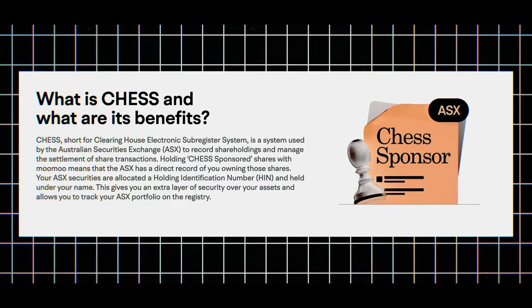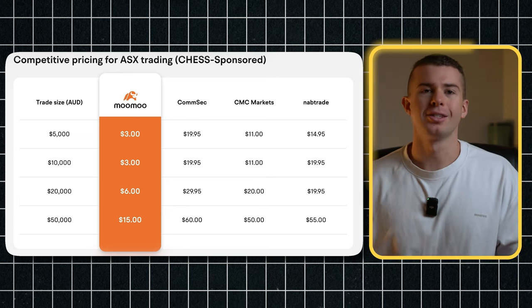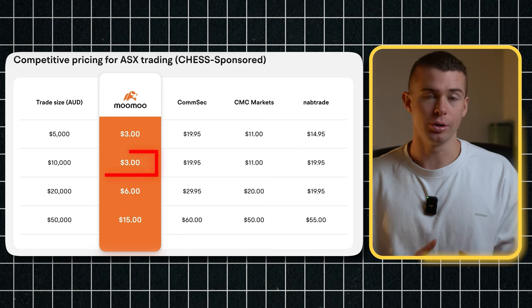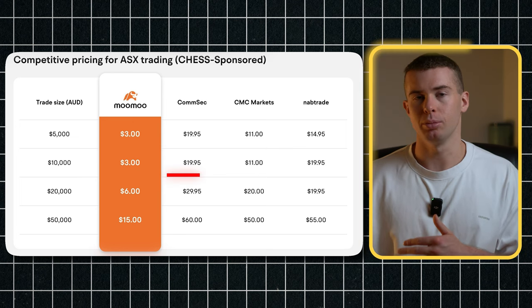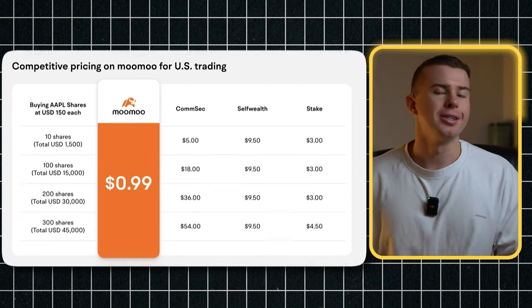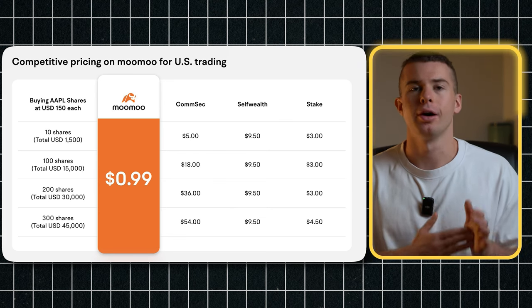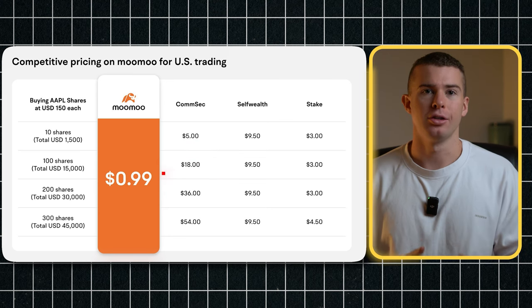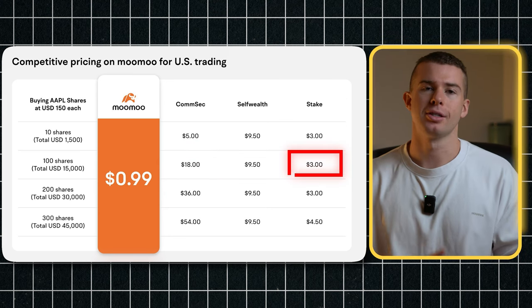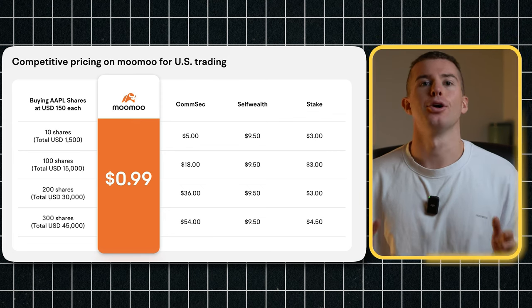Moomoo is also CHESS sponsored, so that means that these stocks are held in your name, and they're not held on the platform itself. This adds a lot of extra security. If you were to invest $10,000 into the Australian market on Moomoo, it's going to cost you 3 AUD, whereas Comsec will be just under $20. This trend continues for the American market as well — if you wanted to buy 100 shares of a US company, it'll be 99 US cents on Moomoo, but then on Comsec it's just under $20. Moomoo isn't a whole lot cheaper than Stake, but it's still cheaper overall — Stake is going to be $3 USD, and that $2 difference does add up over time.